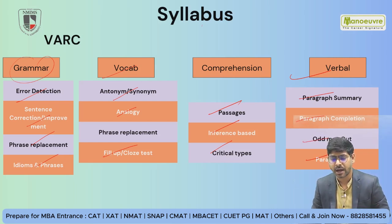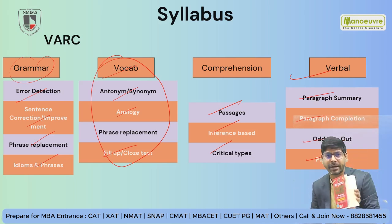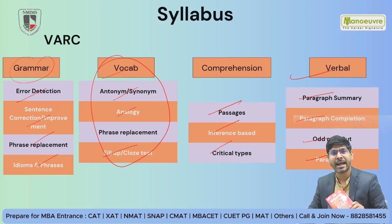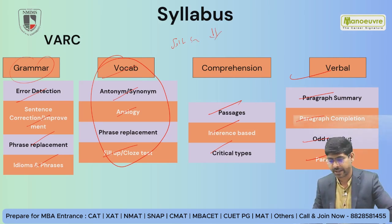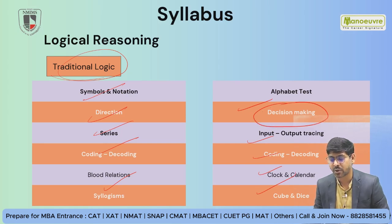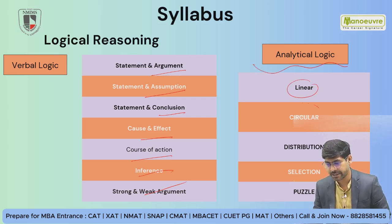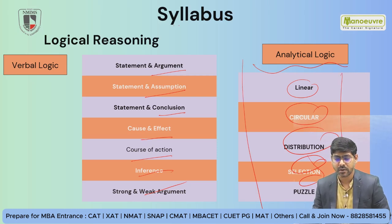In the verbal section: para summary, para completion, odd one out, and para jumbles. Vocabulary is the toughest part of the NMAT verbal section. The book 'Word Power Made Easy' is recommended. For Reasoning: coding-decoding, clock and calendar questions, verbal logic — argument, assumption, conclusion, cause and effect, course of action, and inference-based questions. Analytical arrangement includes linear, circular, distribution, selection, and puzzle questions.